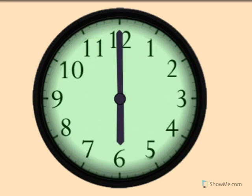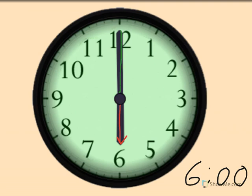6 o'clock. Show me 6 o'clock on your clock. The little hand tells the hour. The little hand points to the 6. The big hand tells the minute. Big hand points straight up is o'clock.